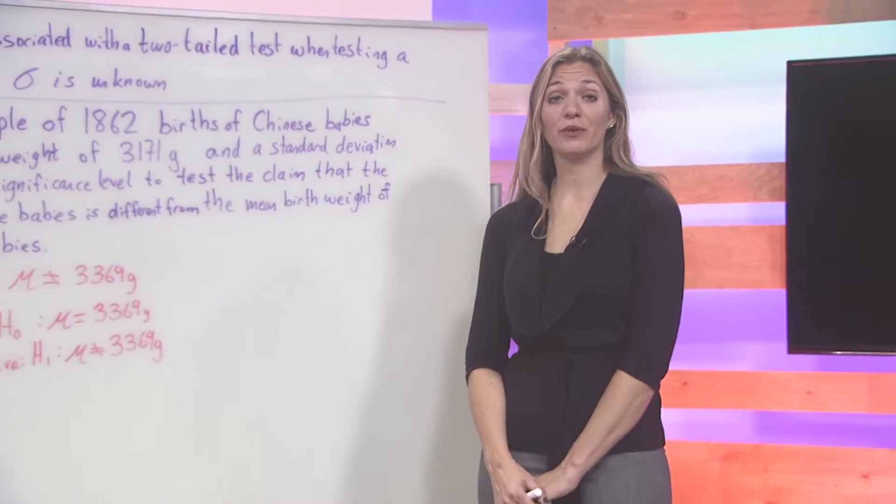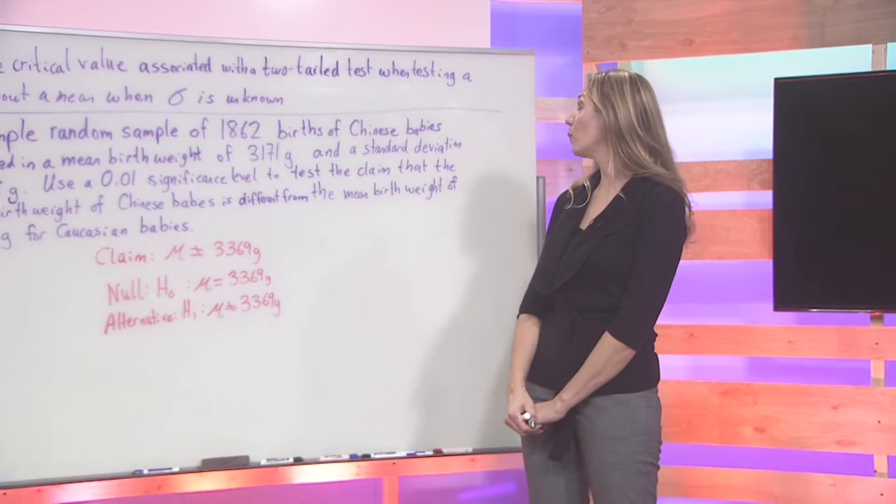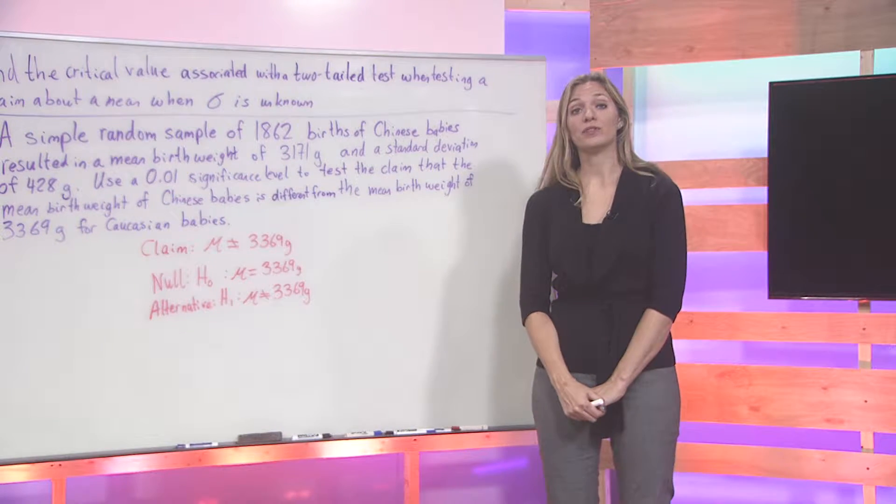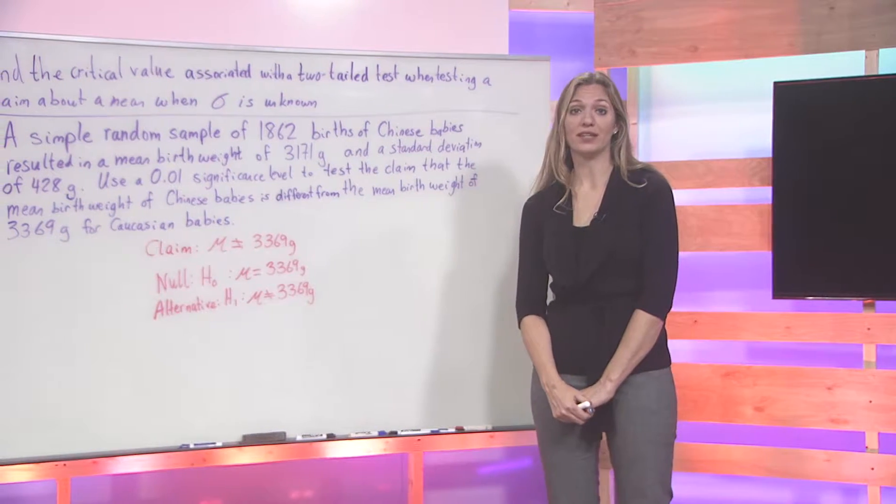In this exercise we are going to find a critical value associated with a two-tailed test when testing a claim about a mean where sigma is unknown.